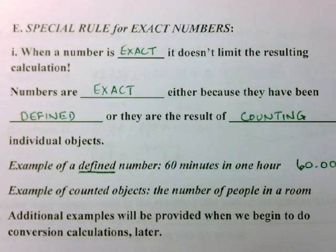Another example of an exact number is when we have counted individual objects. An example of this might be the number of people in a room.